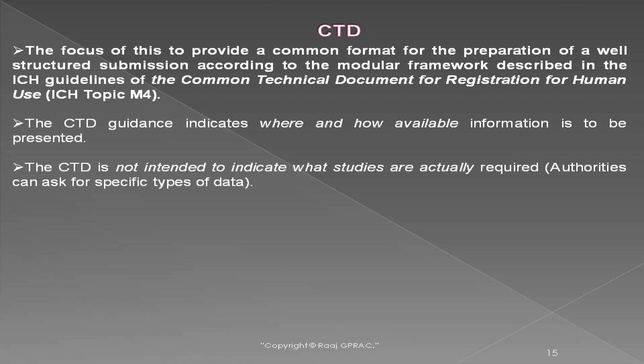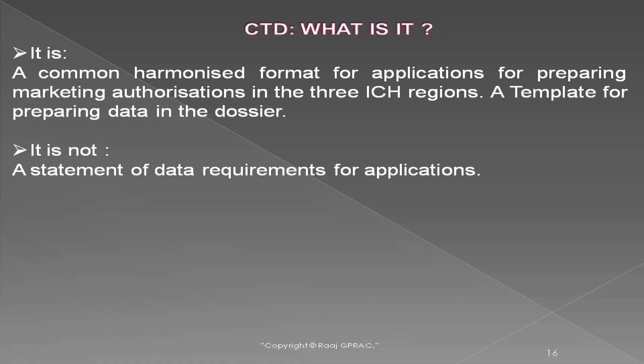The CTD guidance indicates where and how available information is to be presented. It is not intended to indicate what studies are actually required — authorities can ask for specific types of data. CTD mainly comprises technical and scientific data. It is a common harmonized format for preparing marketing authorization applications in the three ICH regions — Europe, US, and Japan — though nowadays many countries follow this ICH format. It is a template for preparing data in dossier form, not a statement of data requirements.